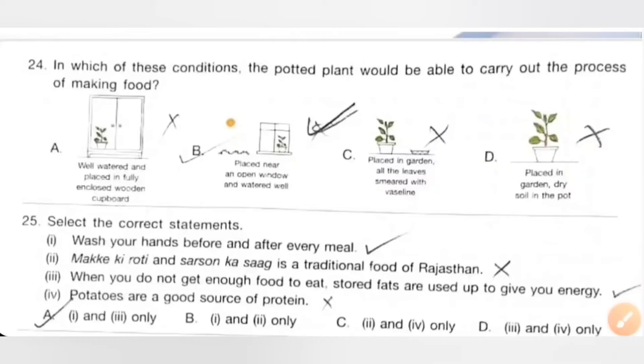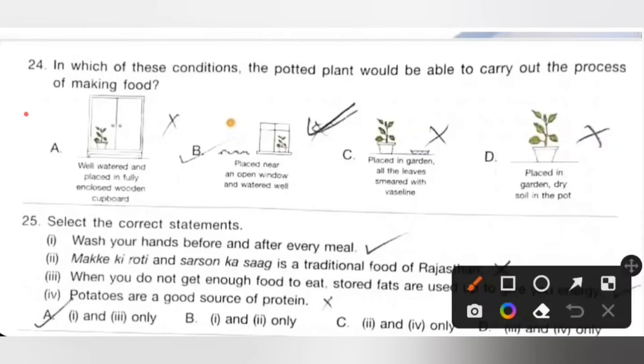Twenty-fourth: In which of this condition would the potted plant be able to carry out the process of making food? We know plants need air, water and sunlight to make food. So option A: Well watered and placed in fully enclosed wooden cupboard, it can't make its own food in the absence of sunlight. B: Placed near an open window, unwatered. C: There is no sunlight and placed in a garden, all leaves smeared with Vaseline. D: Placed in garden, dry soil in the pot. So option B.